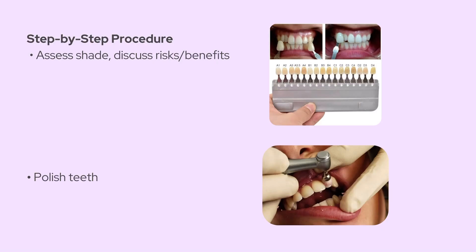Now let's walk through the step-by-step procedure you'd typically follow in the clinic. First, we start with a thorough assessment: evaluate the type and extent of discoloration, and document the initial shade using a shade guide or photos. It's also important to explain the risks and benefits to the patient, like sensitivity or uneven results. Next, we do a gentle polishing of the teeth to remove any surface debris and plaque. That helps improve the contact between the bleaching agent and the tooth surface.